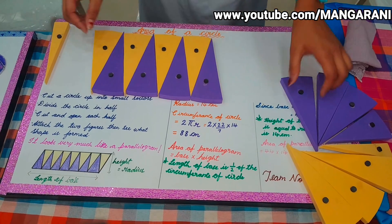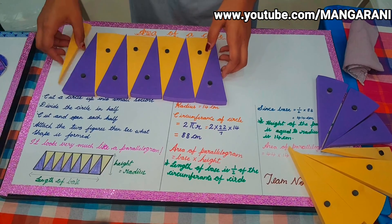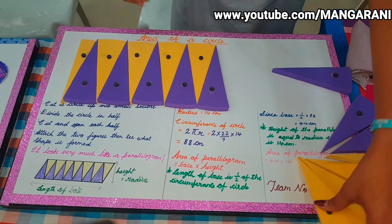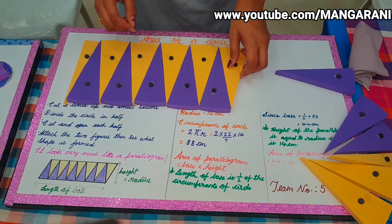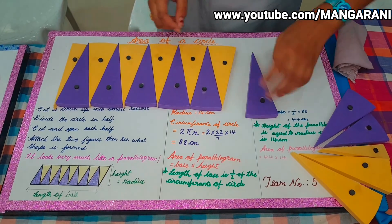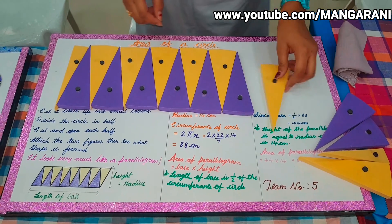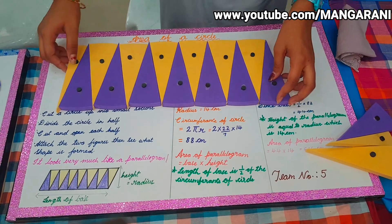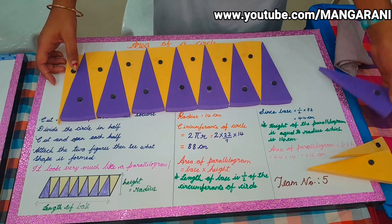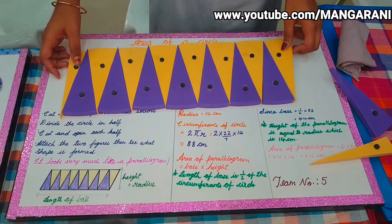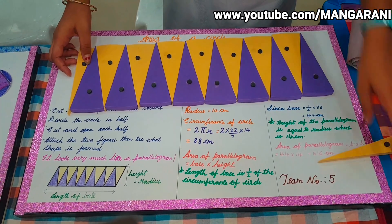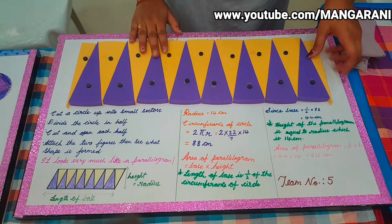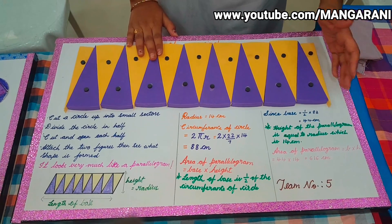Can you find which shape is forming through these sectors? It looks very much like a parallelogram. This is the length of the base and that is the height, which is equal to the radius of the circle.